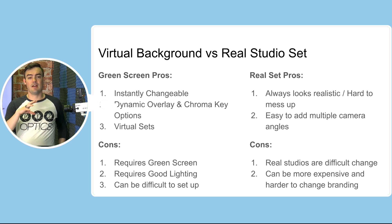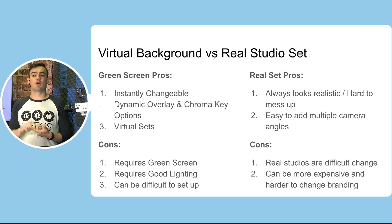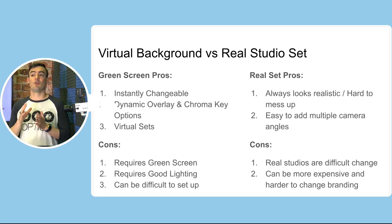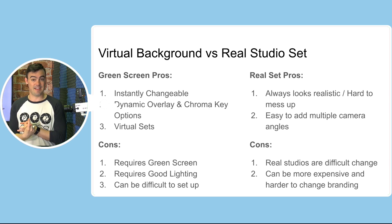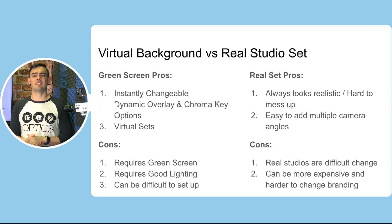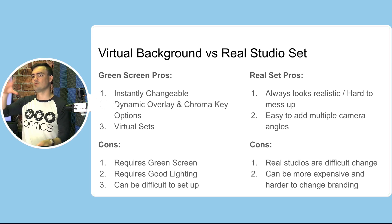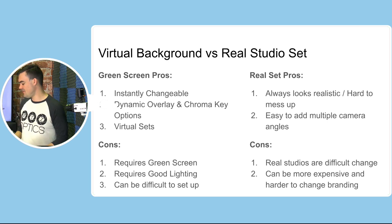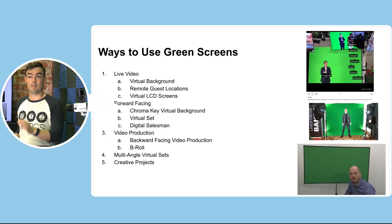Using a virtual set does require a green screen and really good lighting, and it can be difficult to set up if you don't have the right lighting. A real set is really great because it always looks realistic — it's hard to mess up and kind of dummy-proof. You can have lots of different camera angles: close-up cameras, wide angles. The cons of a real set are that it's difficult to change and a little more expensive to set up versus just popping up a green screen.